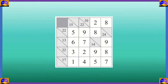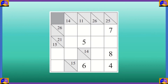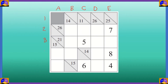So we got it correct. Next puzzle. Let's name the columns and rows. This will be column A, column B, column C, column D, column E. And the rows are row 1, row 2, row 3, row 4 and row 5.